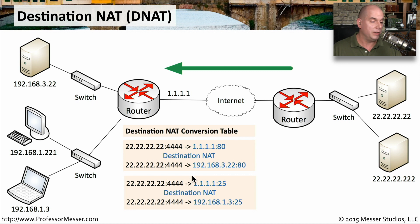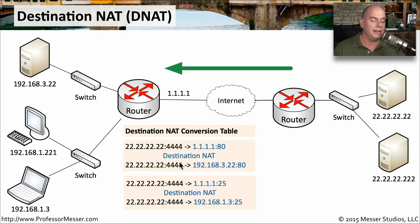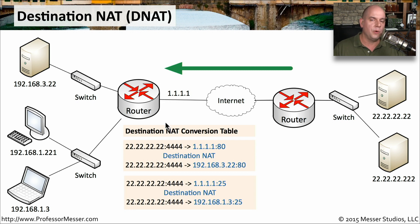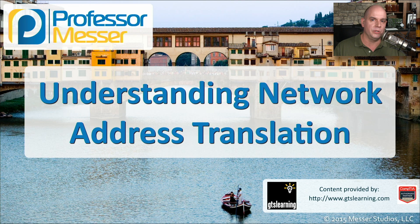We might also have a separate mail service running inside our network on a different device — maybe the 192.168.1.3. We can configure our destination NAT so that if traffic arrives to 1.1.1.1 on port 25, it changes the destination to 192.168.1.3 on port 25 and redirects it to that specific device. So we can host a number of services, all with different port numbers on our single external IP address, and the destination NAT will determine exactly where that traffic should go based on the port numbers in use.